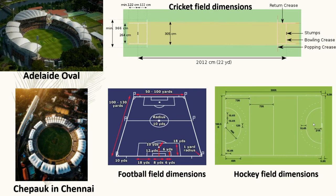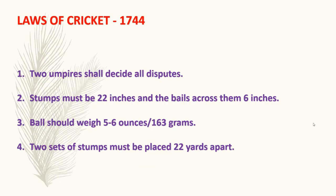Now let's look at the laws of cricket. There were certain laws framed, and these laws were written in the year 1744. After that, many changes took place. The laws stated that two umpires present in the ground shall decide all disputes — they are the final decision makers. The stumps must be 22 inches high and the ball to be of six inches.